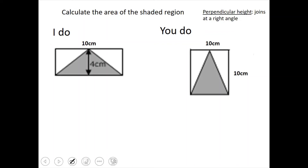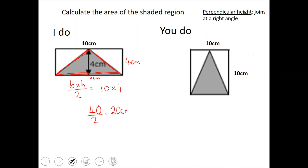You will get questions asking you to work out the area of the shaded region — the darker one. I can identify a triangle here, and we all know the formula: base times height divided by 2. The base is 10 centimeters, and the bottom is also 10 centimeters. The height is 4 centimeters. So 10 times 4 is 40, divided by 2, which gives 20 centimeters squared.